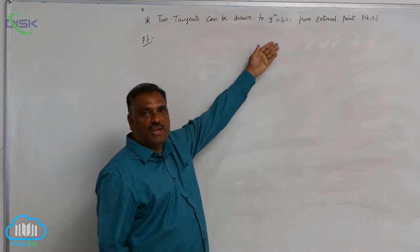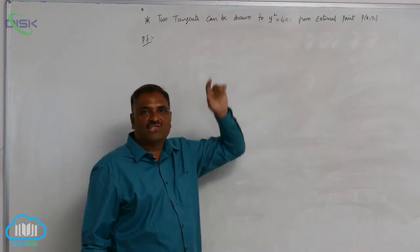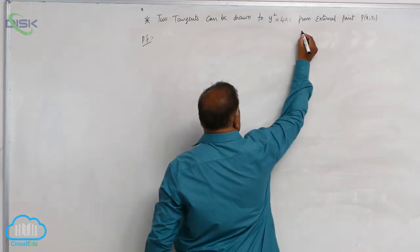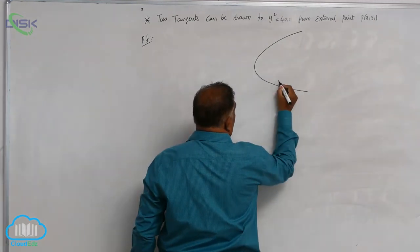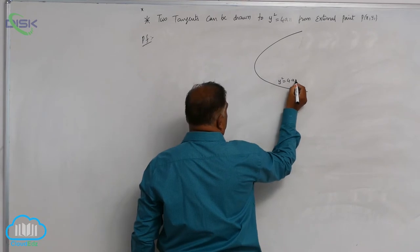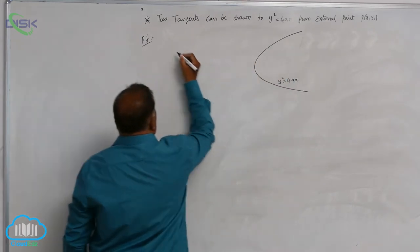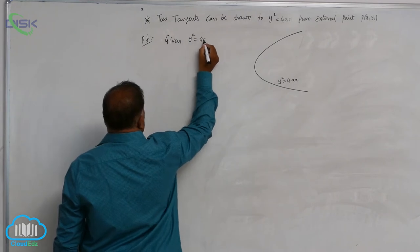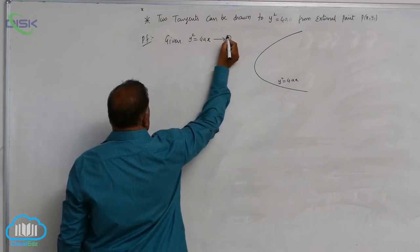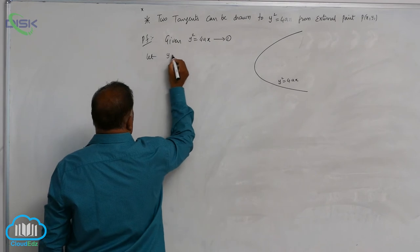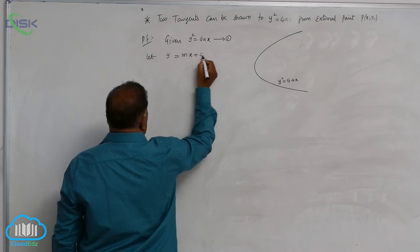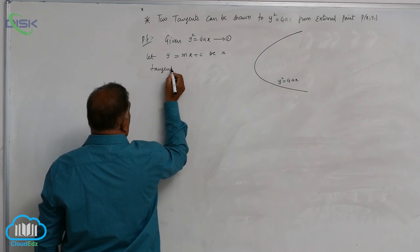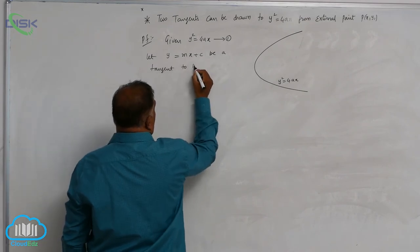Two tangents can be drawn to y squared equals 4Ax from external point (x₁, y₁). Let us consider the parabola y squared equals 4Ax. Let y equals mx plus c be a tangent to the parabola.